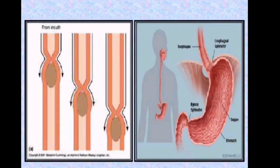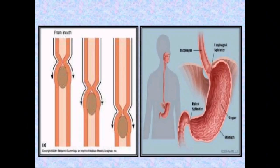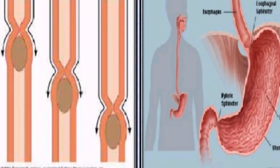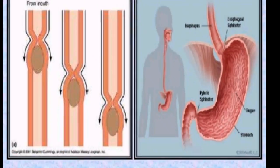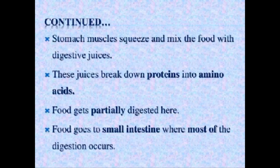This is the structure of your stomach. Food comes from the oesophagus into the stomach. The diagram shows peristalsis — peristaltic movement — food is being pushed from top to bottom. Stomach muscles squeeze and mix the food with digestive juices, causing the food to be digested.